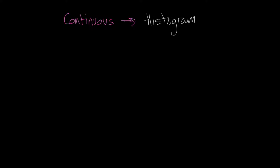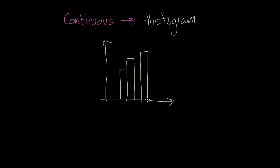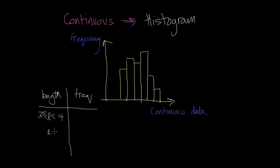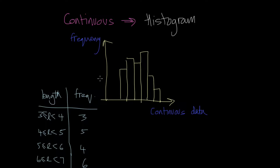For continuous data, we represent it using a histogram. Unlike the column graph, in a histogram the columns are next to each other with no gap between them — this is how you know it represents a continuous variable. For example, measuring the length of lobsters, I'd make a table with intervals like length greater than or equal to three but less than four, then four to five, and so on, with corresponding frequencies: three, five, four, and six.